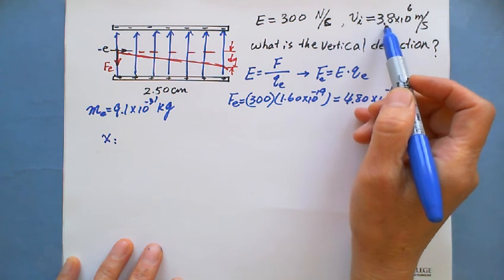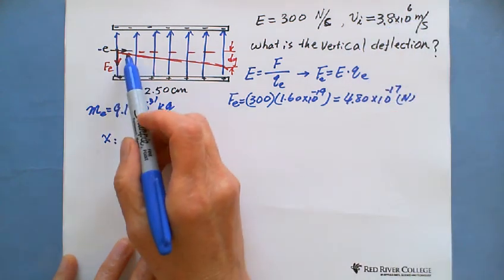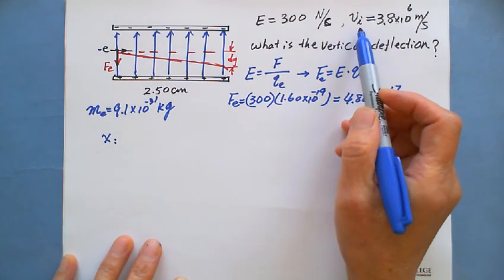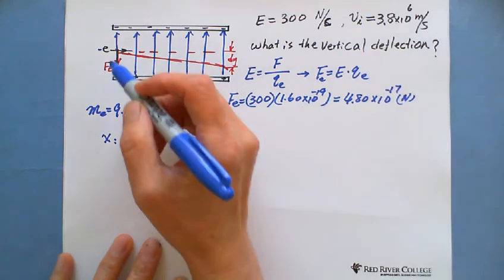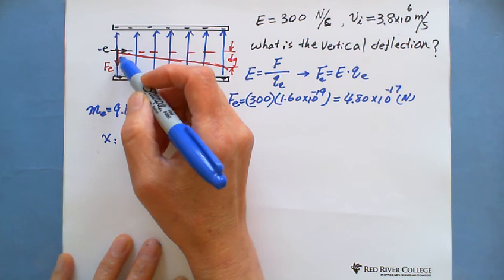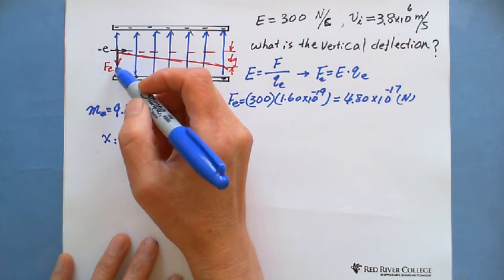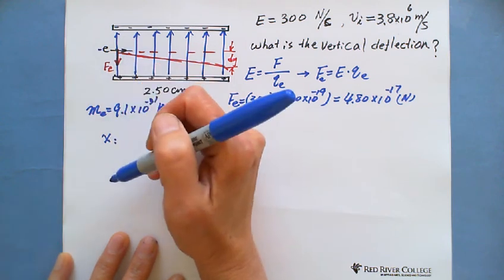The initial velocity is 3.8 times 10 to the 6 meters per second. It never changes. So we still keep the same horizontal velocity. But the vertical is with zero velocity. Initial is no vertical velocity. That's why they do free fall, right? Just like free fall, but this is accelerated.